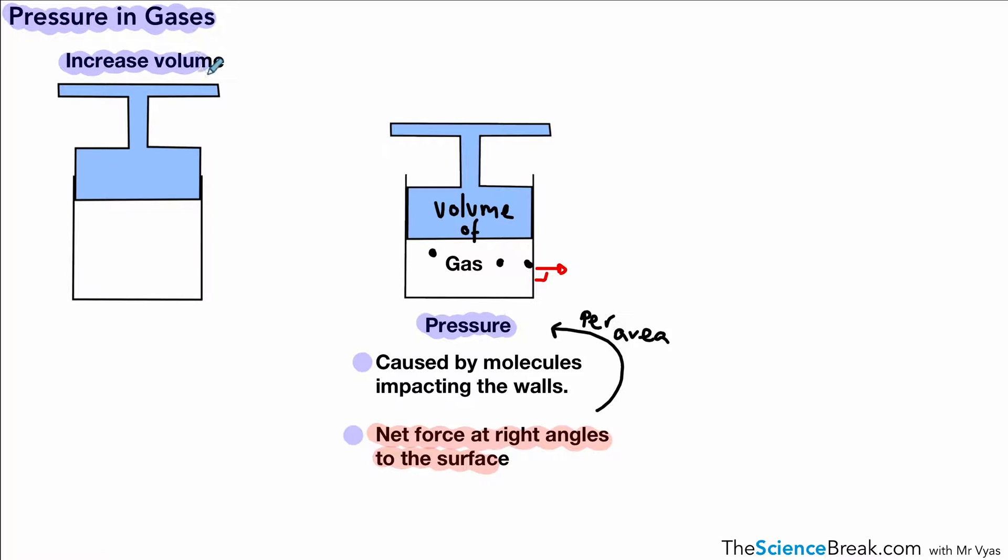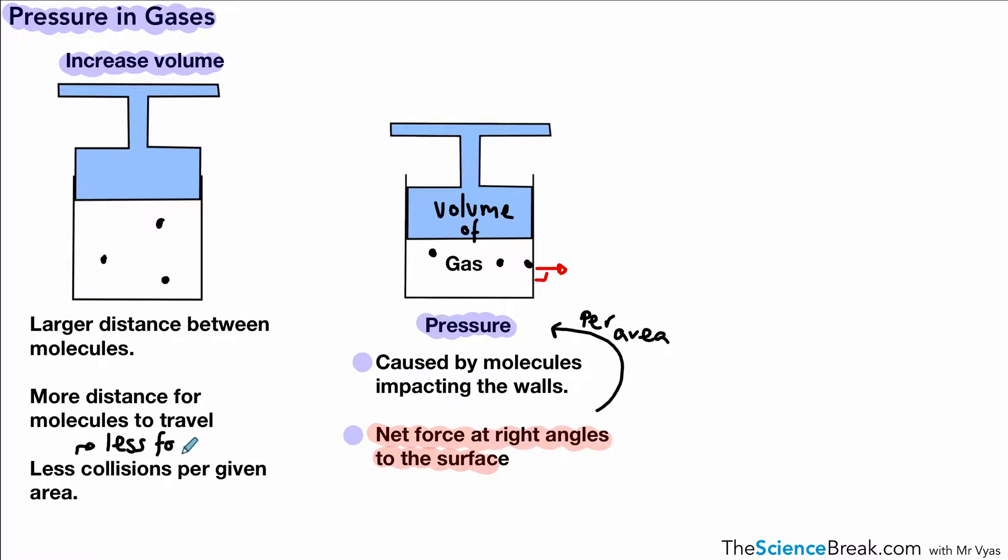We can increase the volume of the gas. With a bigger volume, the particles or molecules are more spread out. There is a larger distance between molecules, so they have to travel more distance to collide with each other or the container walls. This means fewer collisions per given area and less pressure. Less force per given area means lower pressure exerted by the gas.